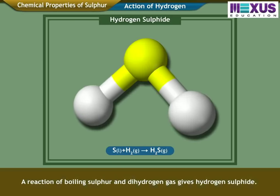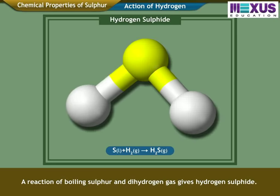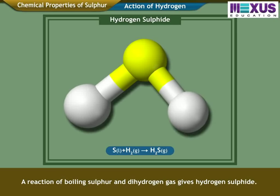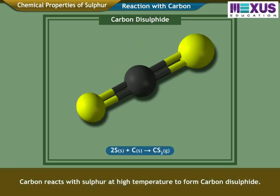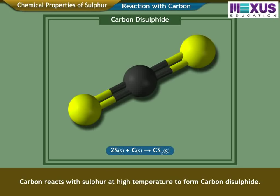Action of Hydrogen: A reaction of boiling Sulphur and dihydrogen gas gives hydrogen sulfide. Reaction with Carbon: Carbon reacts with Sulphur at high temperature to form carbon disulfide.